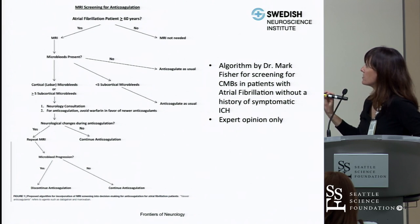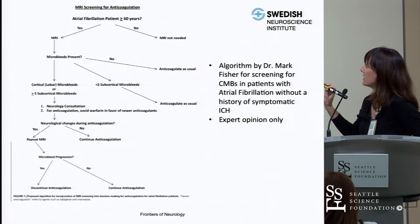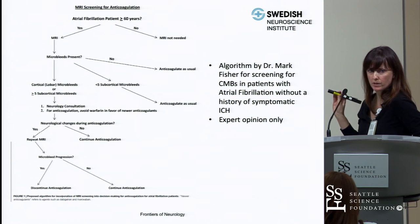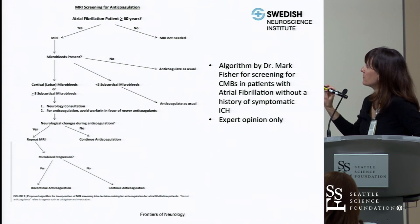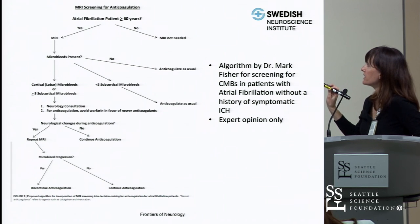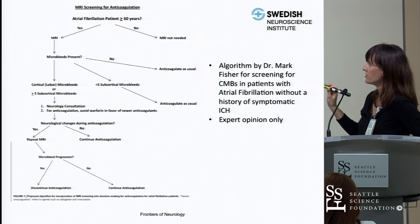If microbleeds are seen on MRI, determine whether they are cortical or subcortical. Fewer than five subcortical microbleeds: anticoagulate as usual. Cortical microbleeds — worrisome for cerebral amyloid angiopathy — or five or more subcortical microbleeds: those patients should have a neurology consultation. If anticoagulation is used, warfarin should be avoided and newer anticoagulants could be considered. He advocates repeating the MRI and if microbleed progression is seen, discontinuing anticoagulation.